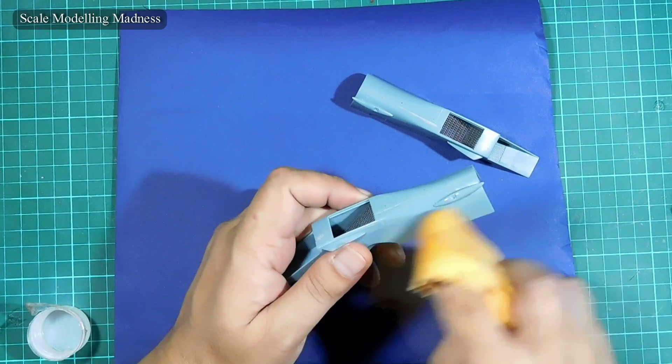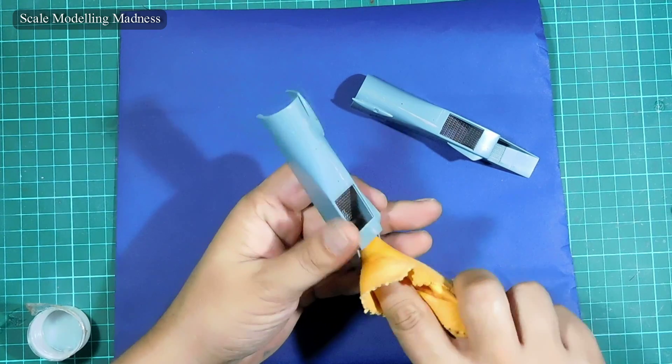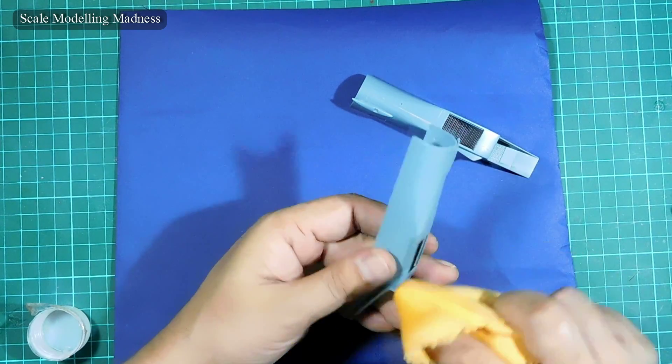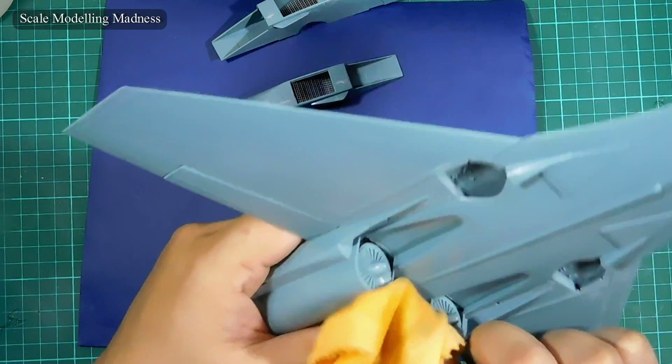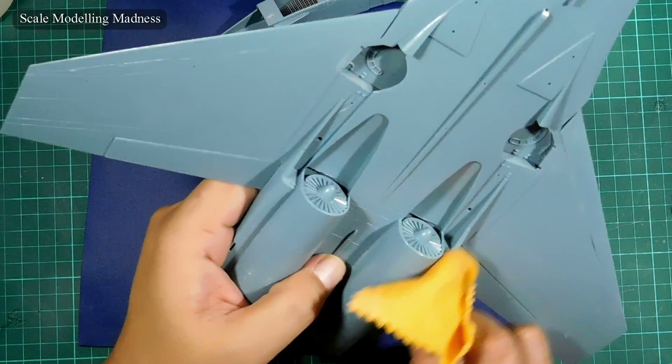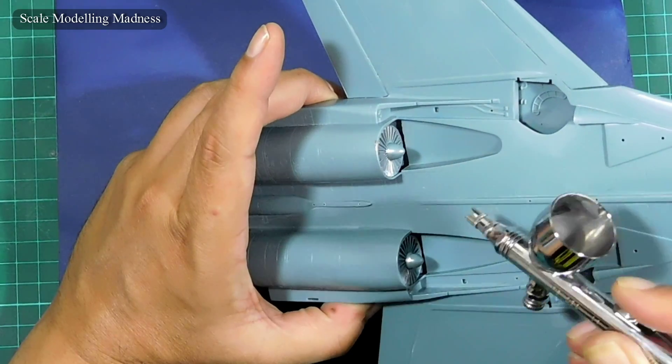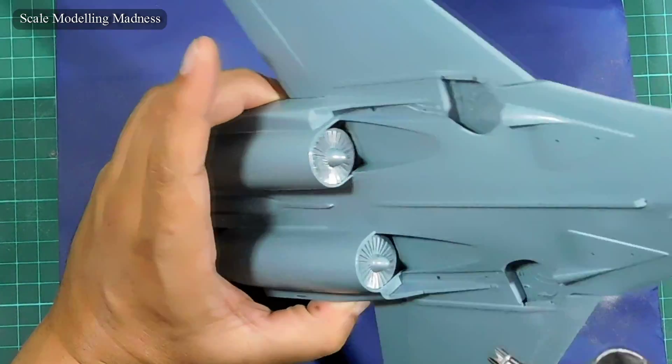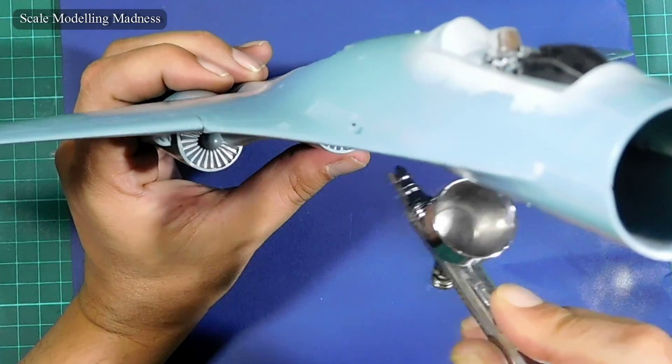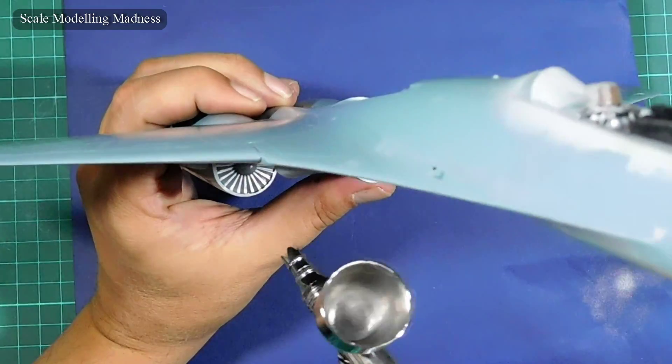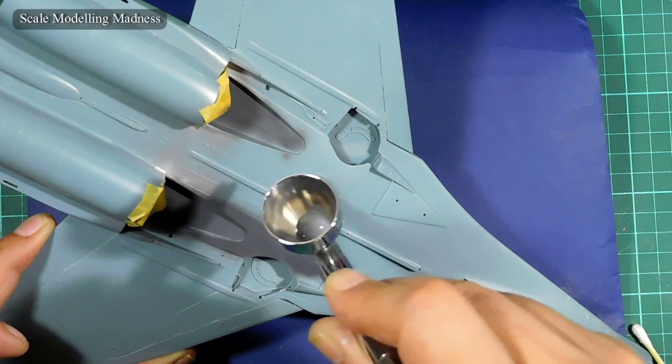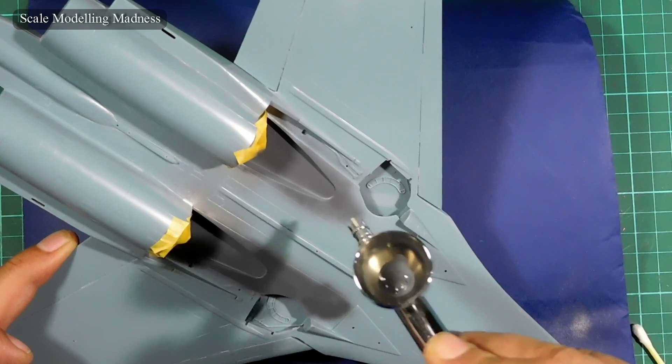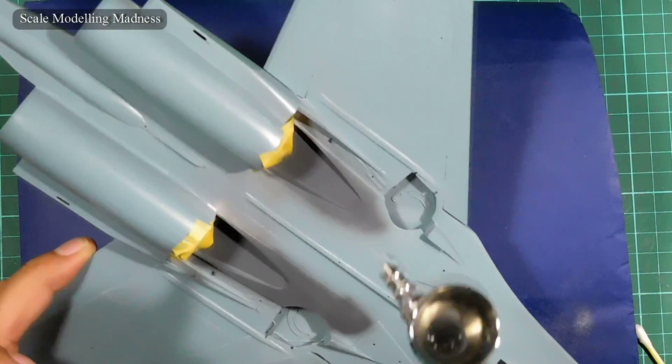Time to paint the intakes. Because of all the sanding and filling that we have done, it is essential that we clean the area to be painted properly. I use some alcohol and a clean, well, relatively clean cloth. The fans are painted steel. The instructions suggest that the intakes be painted light blue, like the rest of the underside of the kit. However, when I checked on the net, I found that the most common intake color was grey.